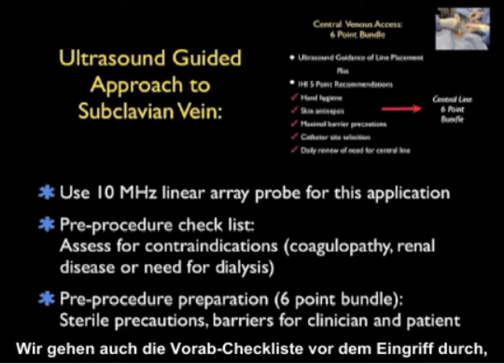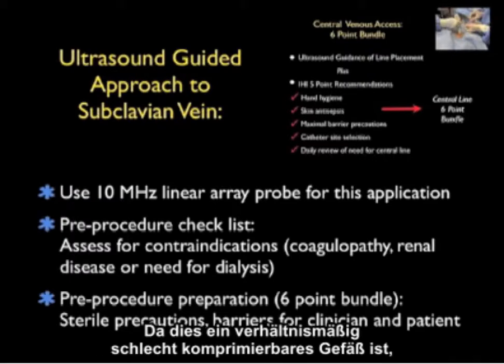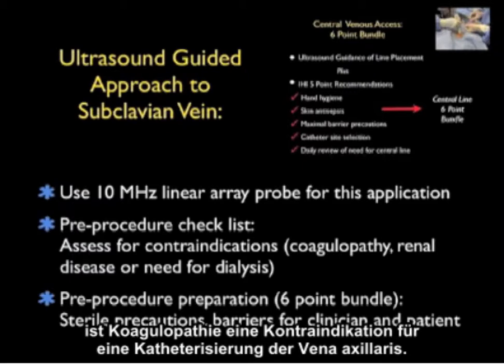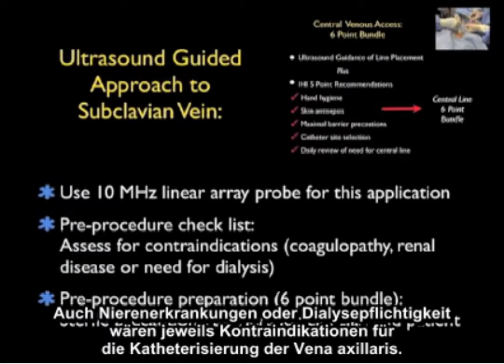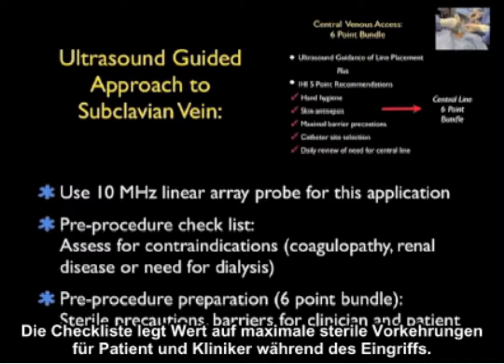We'll also run through a pre-procedure checklist assessing for relative contraindications to axillary vein cannulation. As it's a relatively non-compressible vessel, coagulopathy is a contraindication. Renal disease or need for dialysis are also relative contraindications. We can also use a more extensive six-point bundle checklist, shown in the upper right, which emphasizes the use of maximal sterile precautions for both patient and clinician during the procedure.